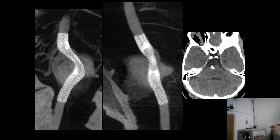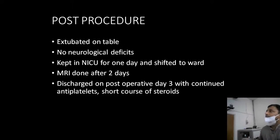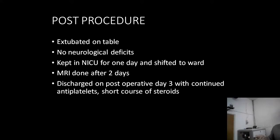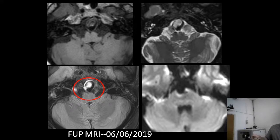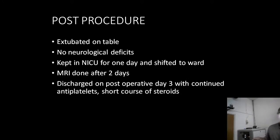The post-procedure CT confirmed a well-placed flow diverter in the basilar artery. The patient was extubated on the table in the cath lab with no neurological deficits. She was kept in ICU for one day then shifted to the ward. A check MRI done after two days showed a hyperintense structure in the anterior part of the aneurysm on T1 and T2 — representing a developing thrombus — with no evidence of perforator infarcts in the brainstem. The patient was discharged on post-operative day 3 on dual antiplatelets and a short course of steroids.